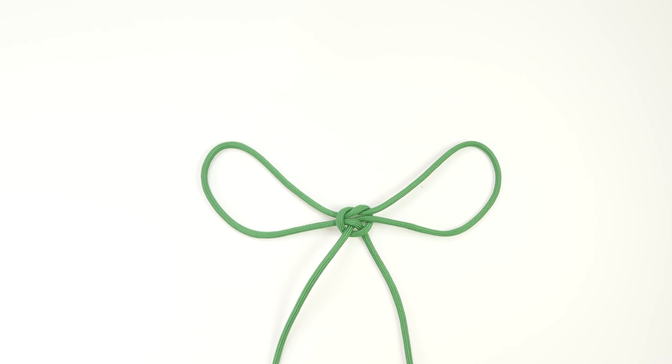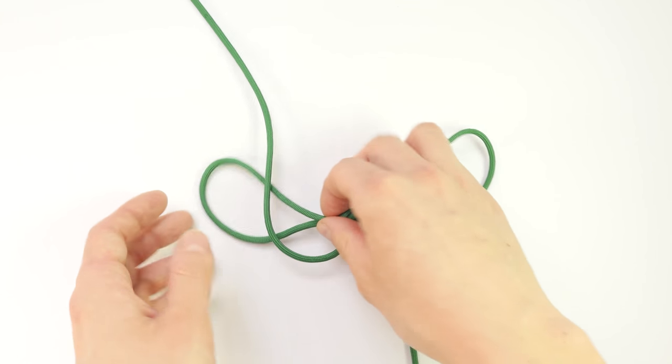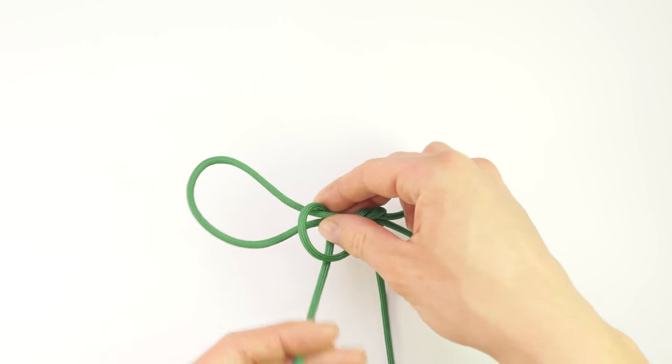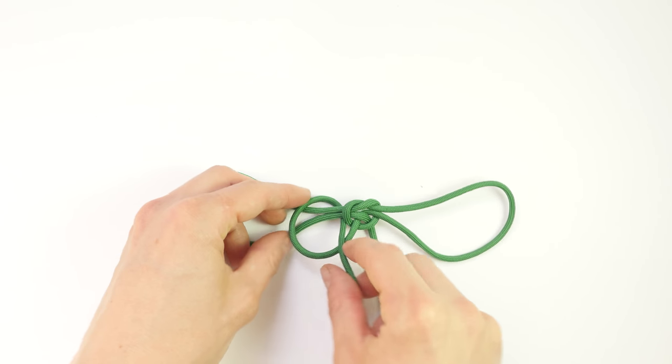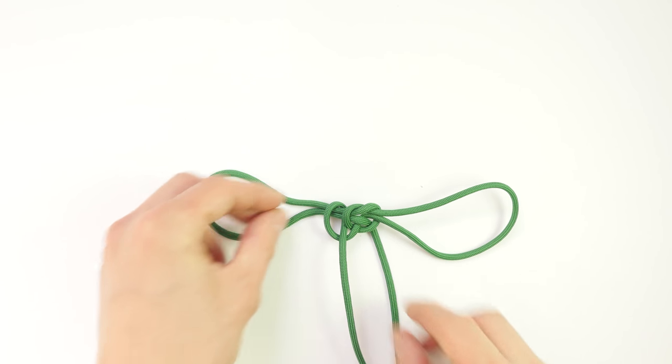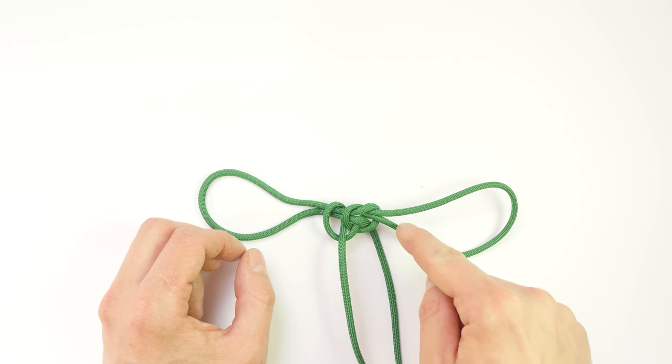If we take a closer look at securing the handcuff knot, we take the left end and make a hitch going over the left loop. With the right end, we make a hitch going under the right loop.